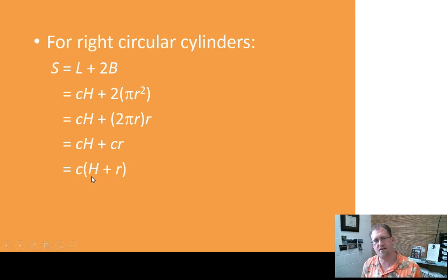So this is a little shorthand, and this may save you some time. Calculate the circumference. Multiply that by the sum of the height and the radius, and you will get the total surface area. It may be helpful to you. If that's confusing, don't sweat it. You can go back to the old formula, and it'll work just fine.